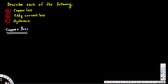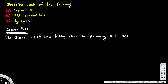Copper loss is nothing but the losses which are taking place in the primary and secondary coil resistance. The losses occurring in the primary and secondary coil resistance are called copper loss.